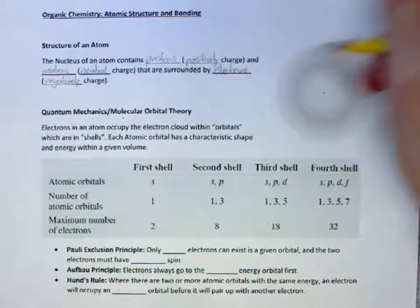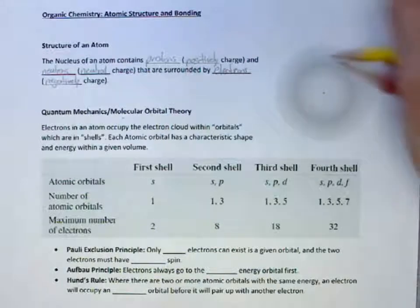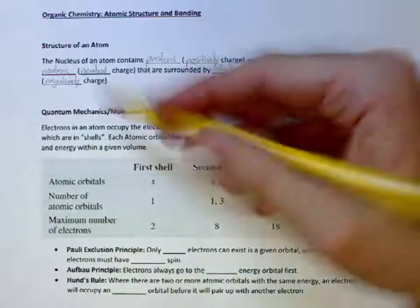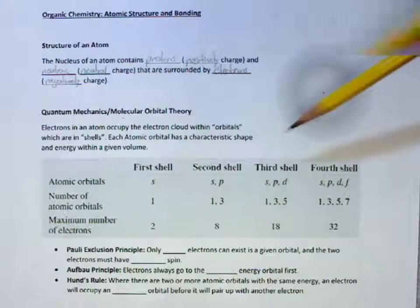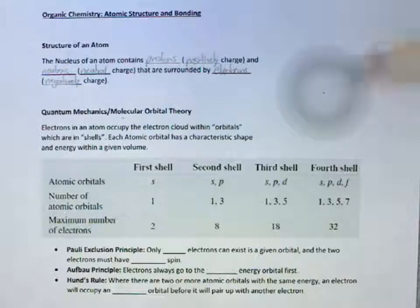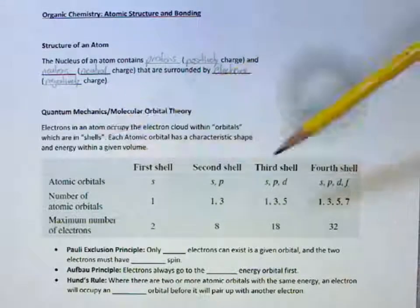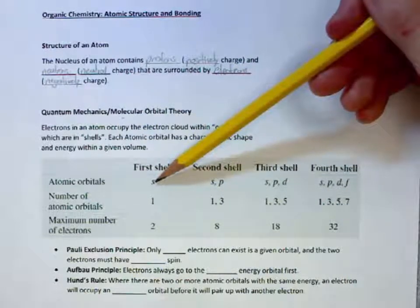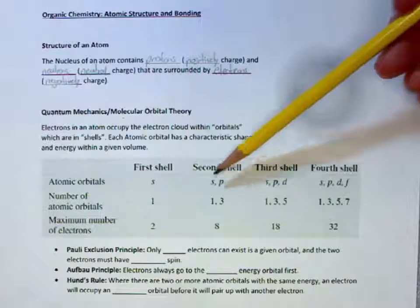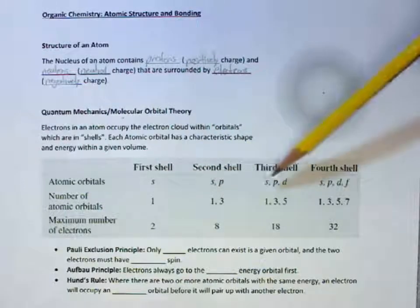How these electrons are arranged in the atom depends on quantum mechanics, which states that electrons exist in orbitals in the electron cloud that are also in shells. For the first shell, we have the S atomic orbital. In the second shell, we have the S and P atomic orbitals.